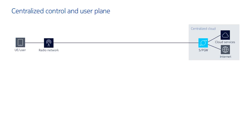In the traditional architecture, so without CUPS, we have a CMG in a centralized data center offering internet access and also access to cloud services. The CMG is implementing the S gateway and the P gateway functionality. Besides the CMG, we also have charging servers and policy servers in the centralized data center. The problem with this network architecture is that the centralized data center can be far away from the end user, far away from the radio network, resulting in long delays and also low throughput because the packets have to be sent all the way to the centralized data center resulting in congestion.